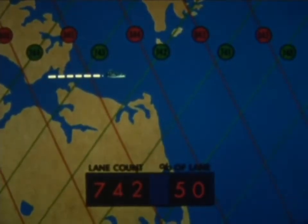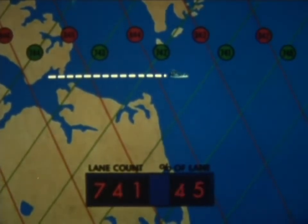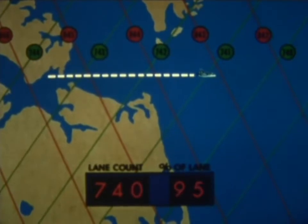Once the counters have been correctly set, the lane count continues automatically, with the numbers of the counters continuously indicating the position of the ship as it moves across the different lanes indicated on the charts.